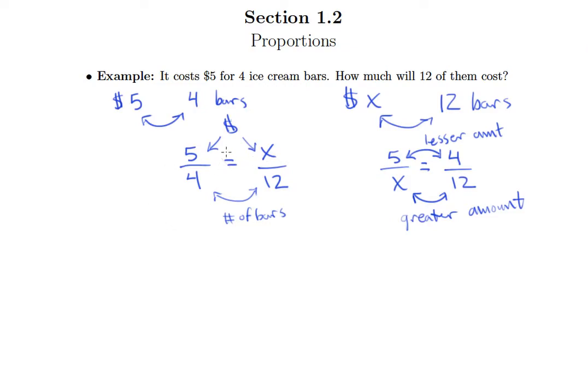All right, but let's go ahead and just solve this one here. So we have 5 fourths equals x over 12. I'll do my cross product, so we have 5 times 12 is equal to 4x. 5 times 12 is 60, you can do your scratch work over on the side if necessary, and then finally we can divide both sides by 4.